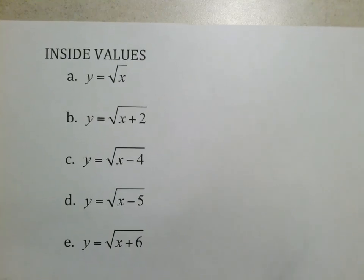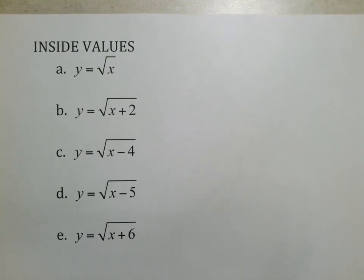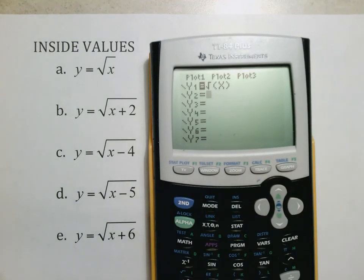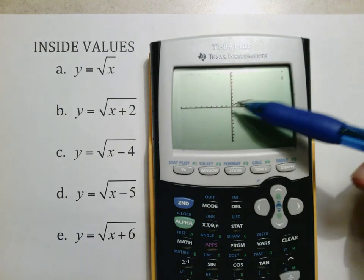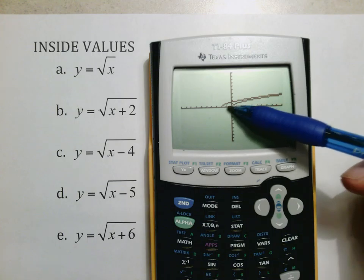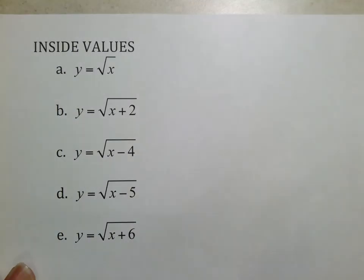Let's look at inside values real quick. We do have our square root of x, which is your parent function, the one that starts at the origin and goes from there. This time I'm going to do square root of x plus two under the radical. Let's see what happens. Here's your original—that moved left. It was here, it moved over there. So this moved left two.